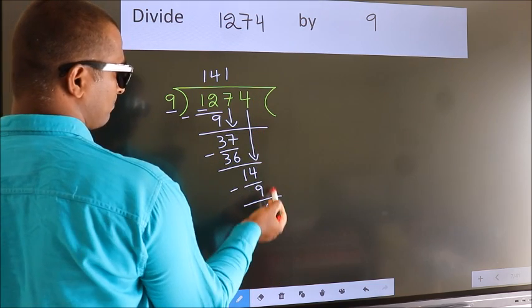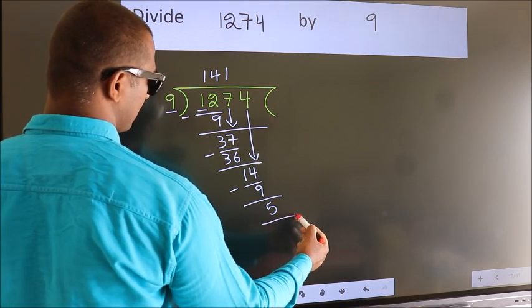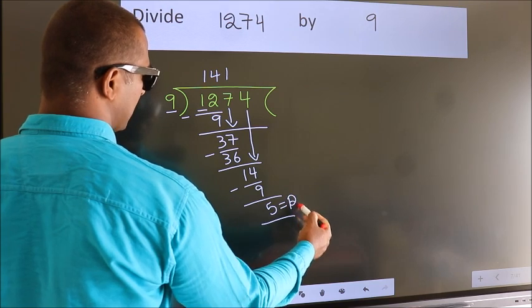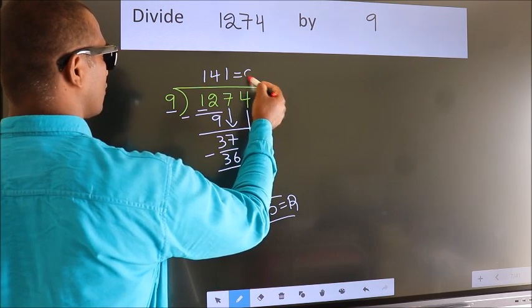No more numbers to bring down. So we stop here. This is our remainder. This is our quotient.